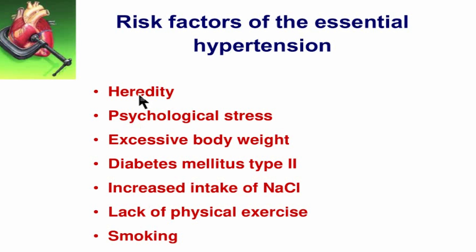For arterial hypertension, a list of risk factors is important. Heredity is a non-modifiable factor — we are talking about candidate genes. Psychological stress is the key player among risk factors because it triggers many negative physiological reactions: catecholamine release, vasoconstriction, peripheral vessel resistance increase, heart rate increase, and cardiac output increase.